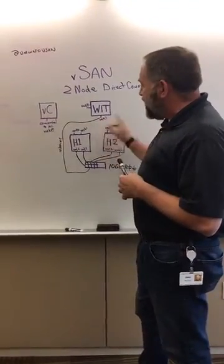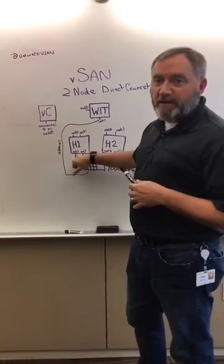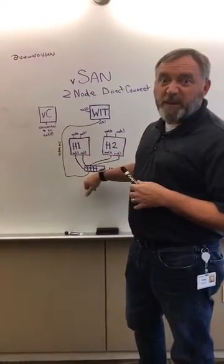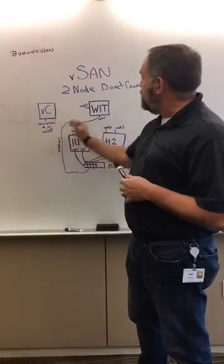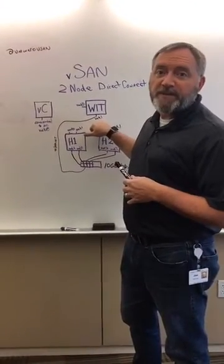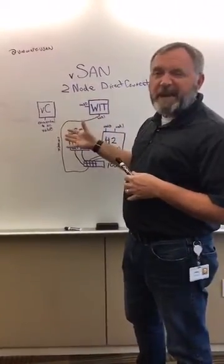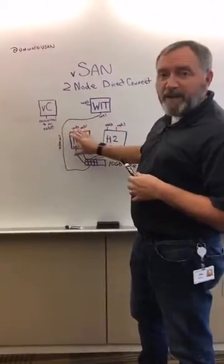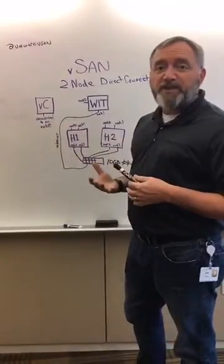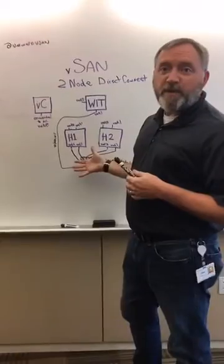And then from a connectivity perspective I have vMk2 which is my vSAN data network connected through this expensive 10 gig switch up to vMk1 which is our vSAN tagged interface on our witness appliance. Now this is a little bit complicated, but in the grand scheme of things if I'm using all flash in my two node vSAN I have to have a 10 gig network back here.